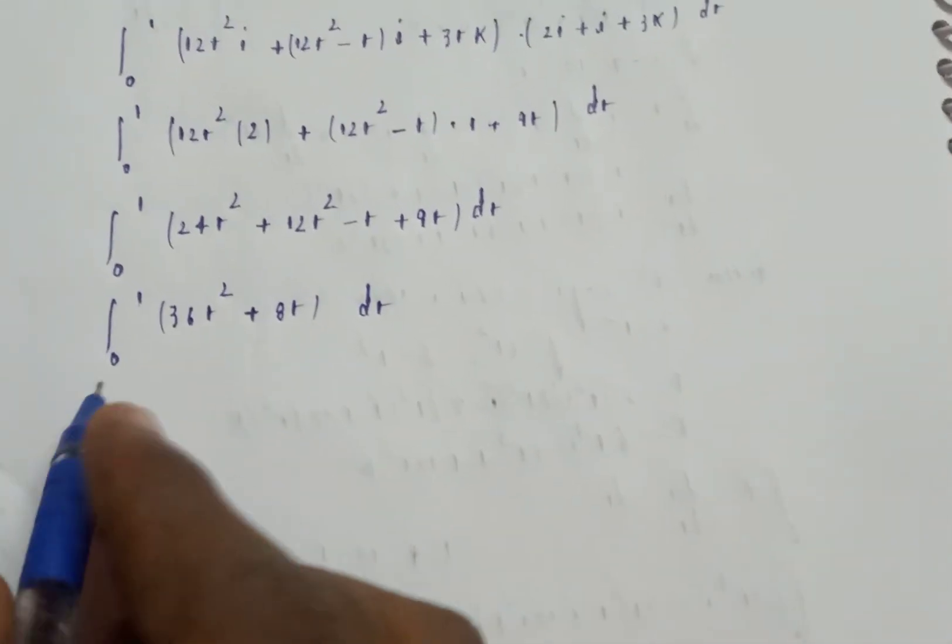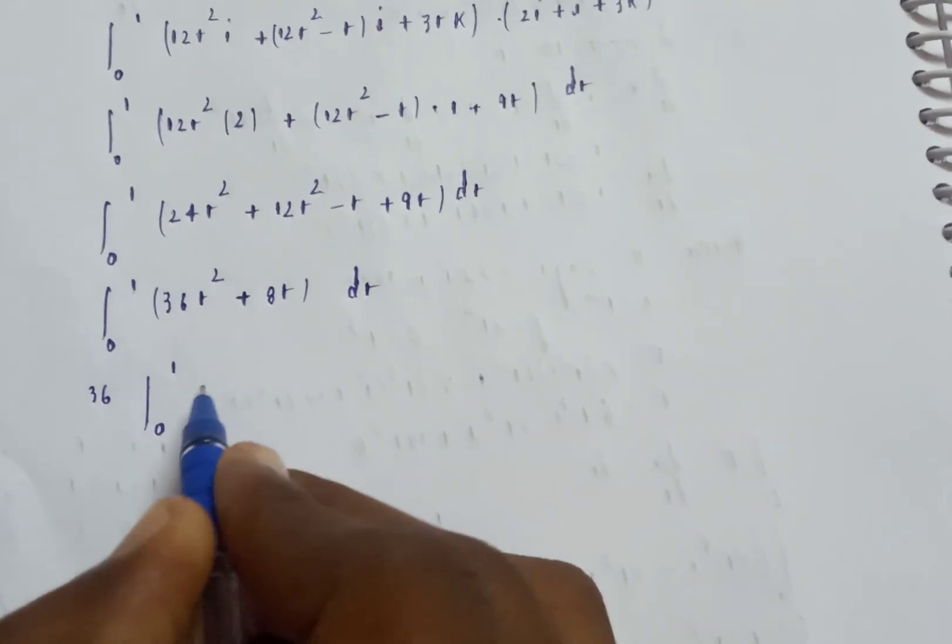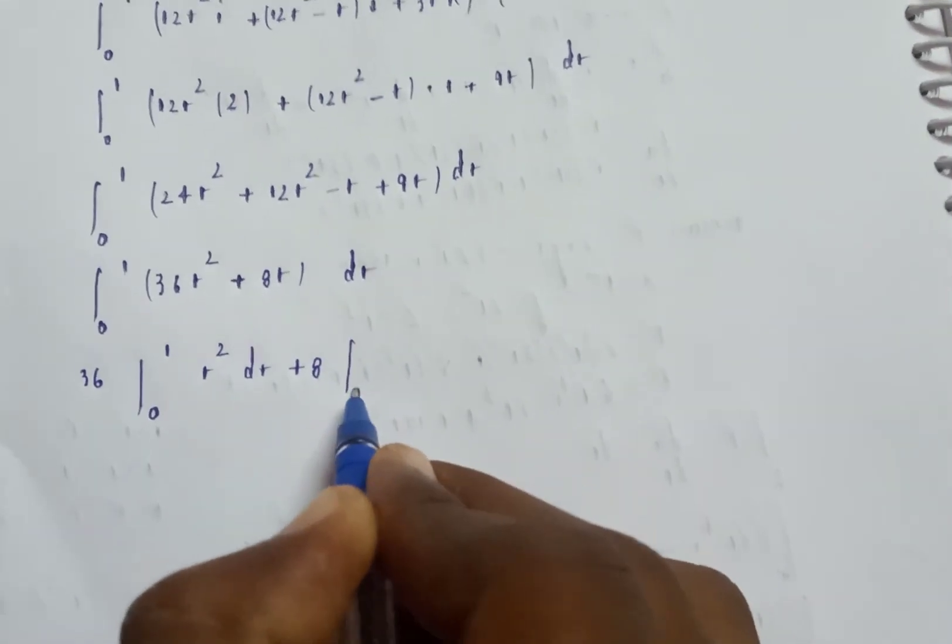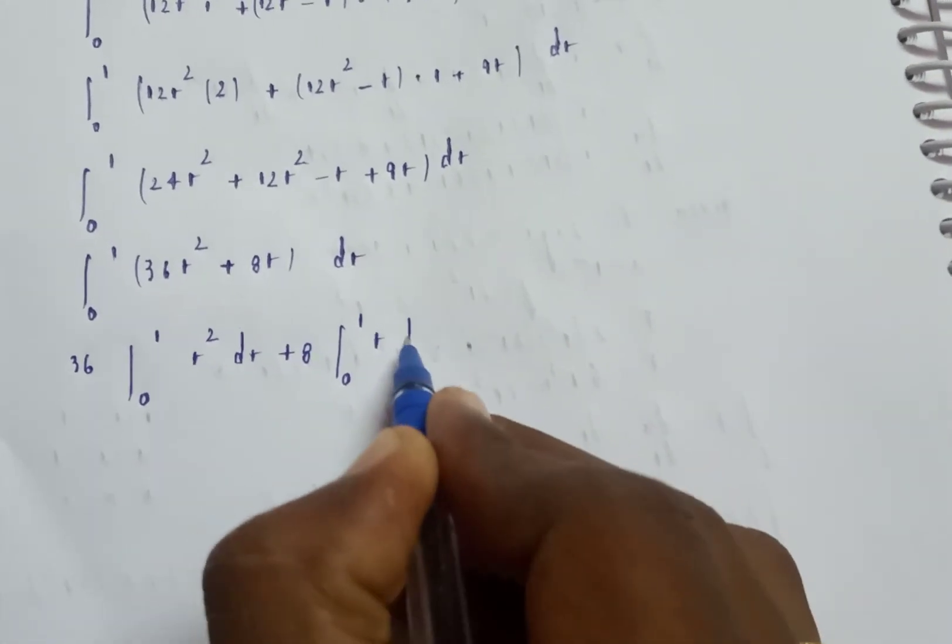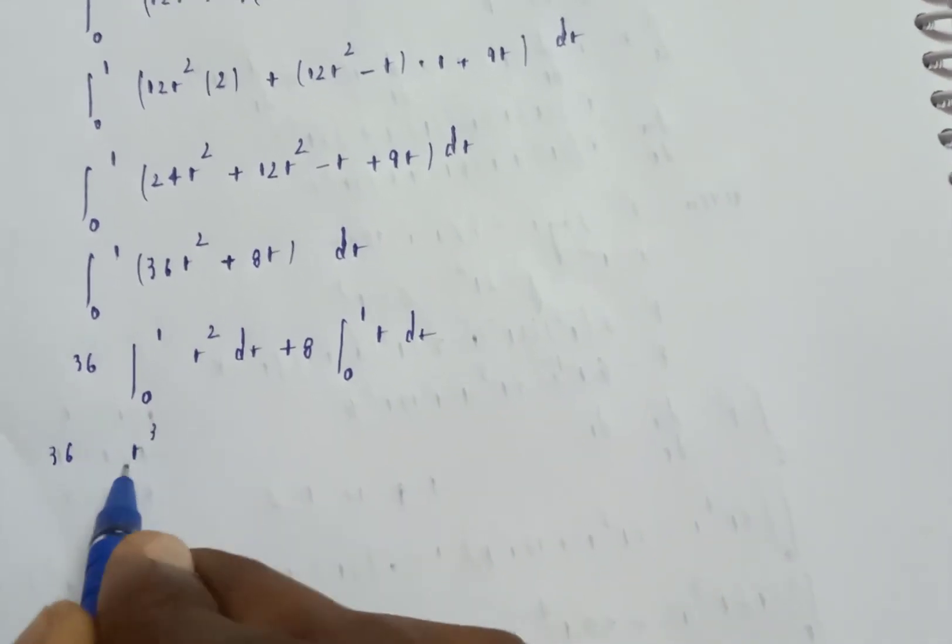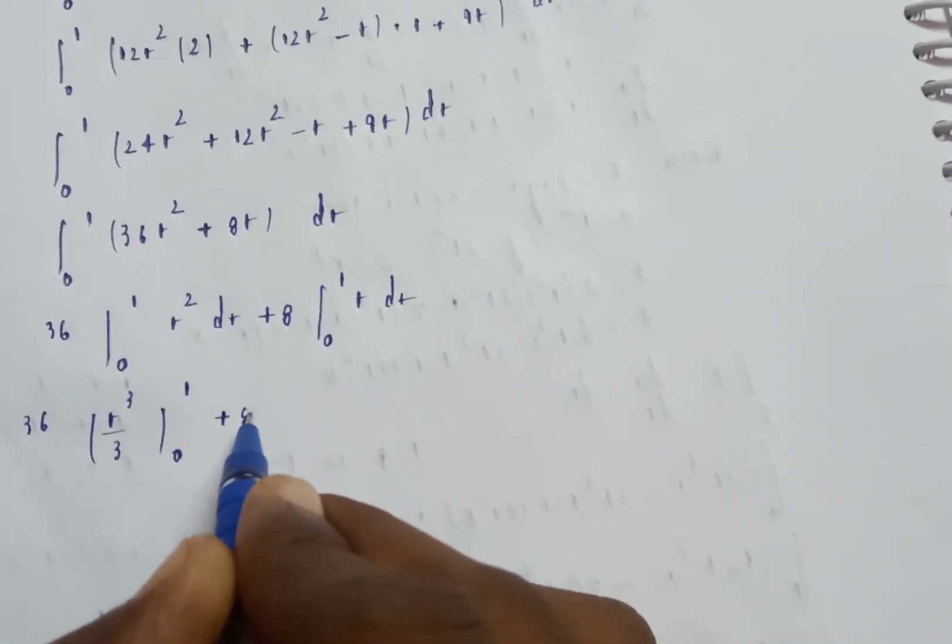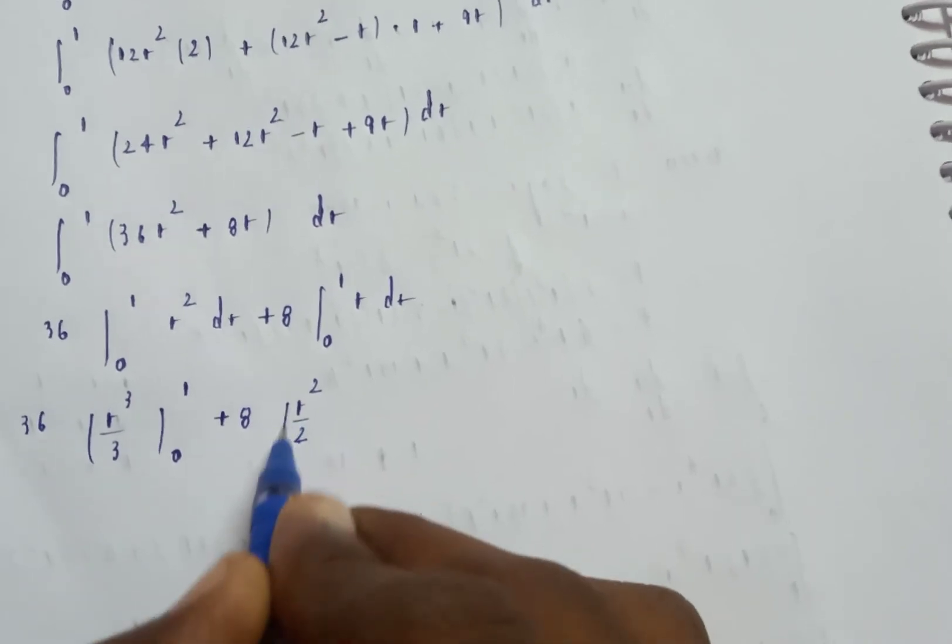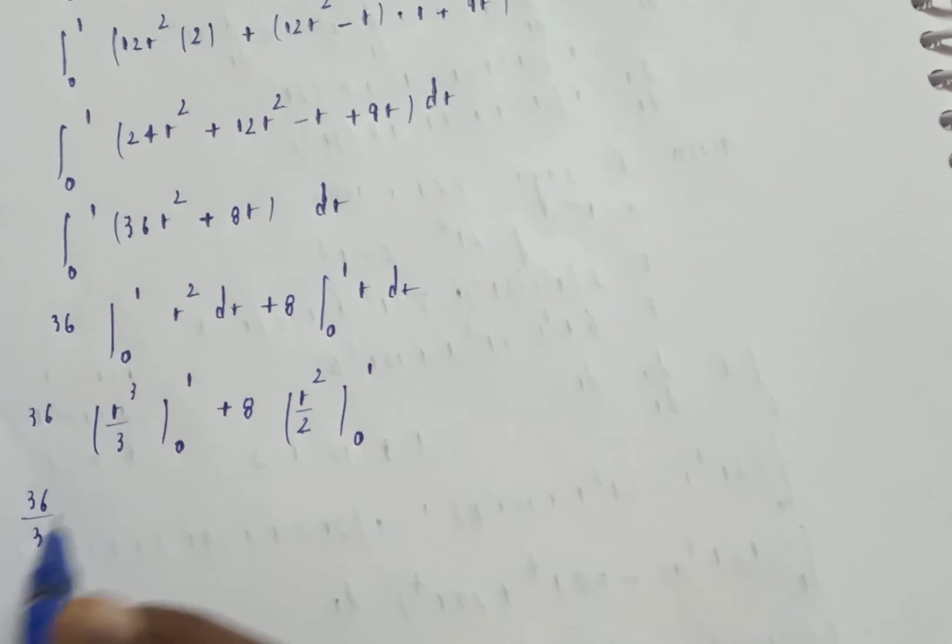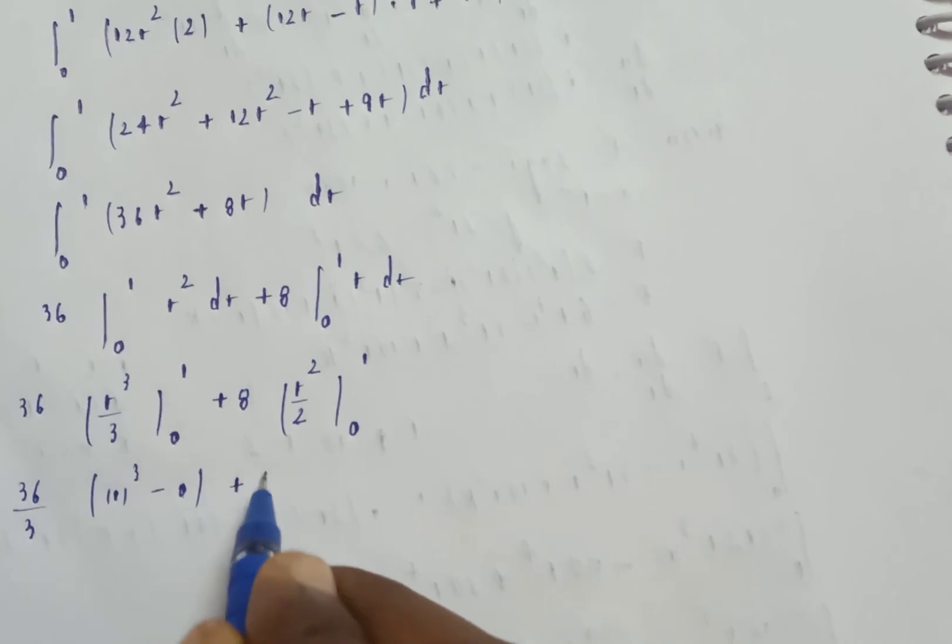Integrating: 36t cube by 3 plus 8t square by 2, evaluated from 0 to 1. This gives 36 by 3 of upper limit minus lower limit, which is 1 cube minus 0, plus 8 by 2 of 1 square minus 0.